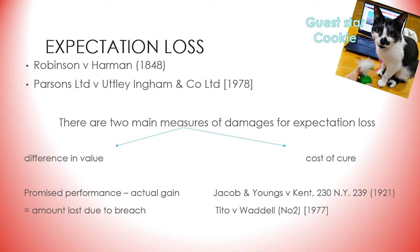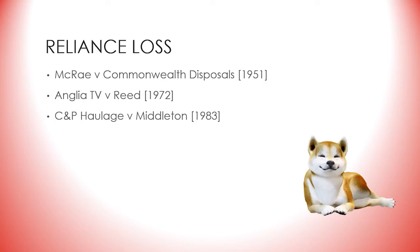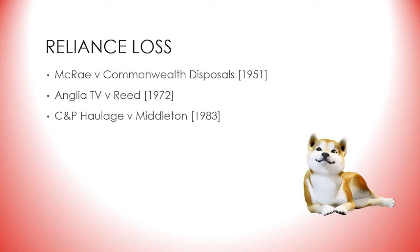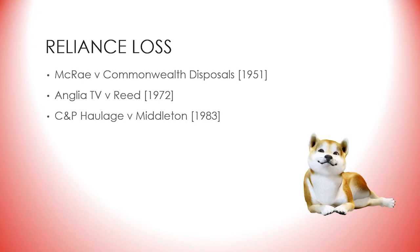We now move on to the second method of calculating damages: reliance loss. When expectation loss is too speculative — for example, it cannot be proved what you lost from the defective performance, or when you have no loss of profits — you can claim for what you spent in performing your side of the contract. An example is the case of McRae v Commonwealth Disposals Commission from 1951, where the commission sold its rights to a tanker that had sunk, providing the claimant with details of where the tanker was; according to the contract McRae could keep whatever he could salvage.